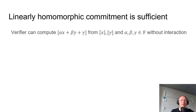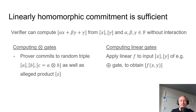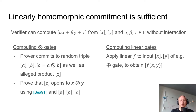This approach only needs linearly homomorphic commitments. The verifier can compute a commitment to alpha*x + beta*y + gamma from commitments to x and y and publicly known values alpha, beta, gamma without any interaction. For linear gates, we apply this homomorphism without any interaction. For multiplication gates, the prover commits to a random multiplication triple and the output z, then uses the circuit randomization technique to prove the commitment in z opens to x multiplied by y.